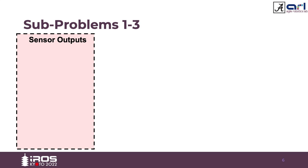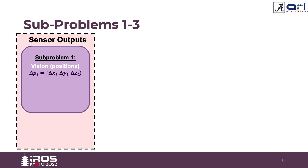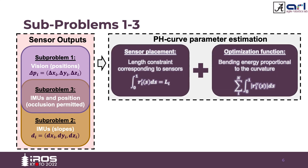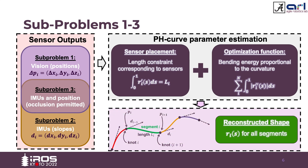Based on the sensor output, three sub-problems were designed: the first uses vision giving positions, the second uses IMUs giving slopes, and the third uses IMUs with occluded positions. Each sub-problem is combined with the length constraint and solved for minimum bending energy using an optimization function. A parametric polynomial equation is obtained for each curve segment, which is the reconstructed shape.